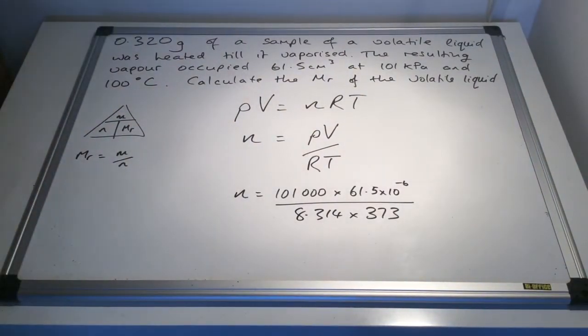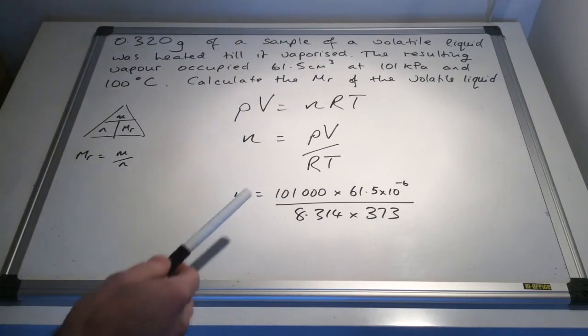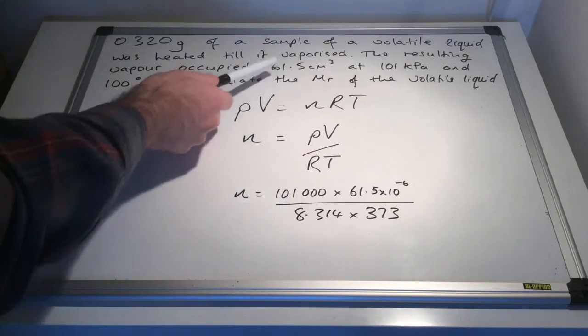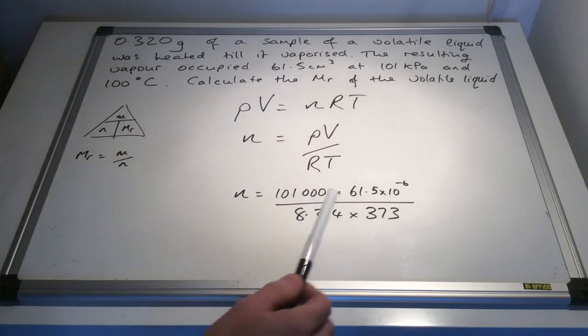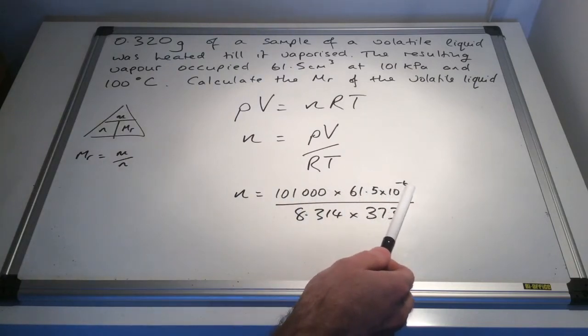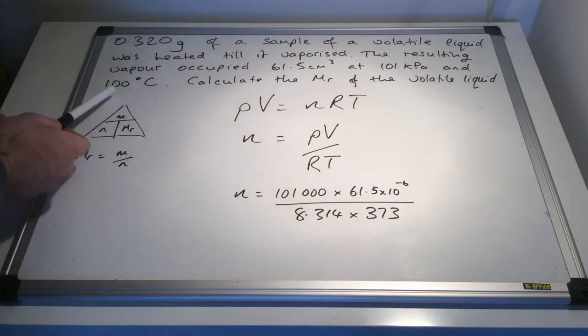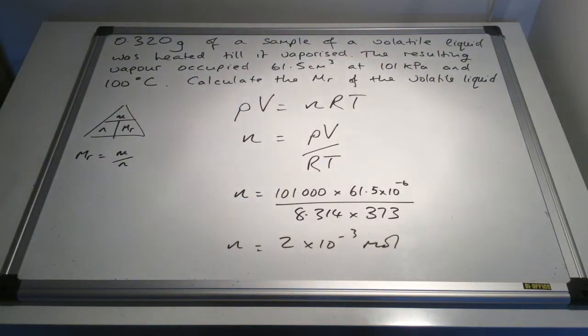So there's all the numbers in now. We've got a pressure of 101 kilopascals, which is 101,000 pascals, a volume of 61.5 cubic centimeters, which is 61.5 times 10 to the minus 6 cubic meters, divided by the ideal gas constant, multiplied by the temperature in Kelvin, so 100 Celsius is 273 plus 100, 373. That gives us a number of moles of 2 times 10 to the minus 3.